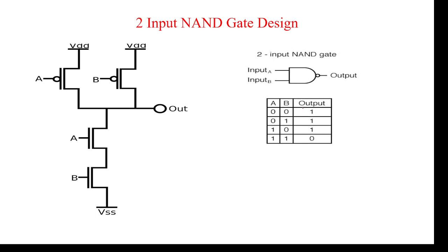This is the truth table. 0·0 whole bar equals 0 bar, which equals 1. 0·1 whole bar equals 0 bar, which equals 1. 1·1 whole bar equals 1 bar, which equals 0. This is the truth table for the NAND gate, and now we move to the internal circuit.